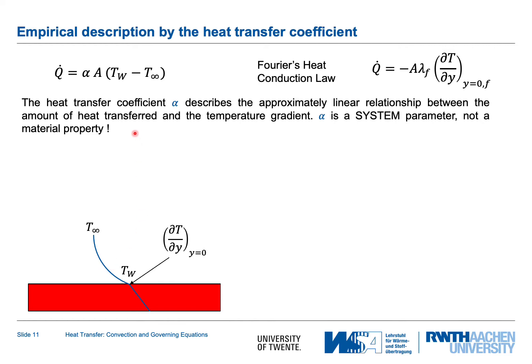We can also look at the units of the heat transfer coefficient. It is defined as lambda times the temperature gradient divided by the temperature difference, giving units of watts per square meter Kelvin. It indicates how much heat is transported per unit surface area per unit temperature difference.